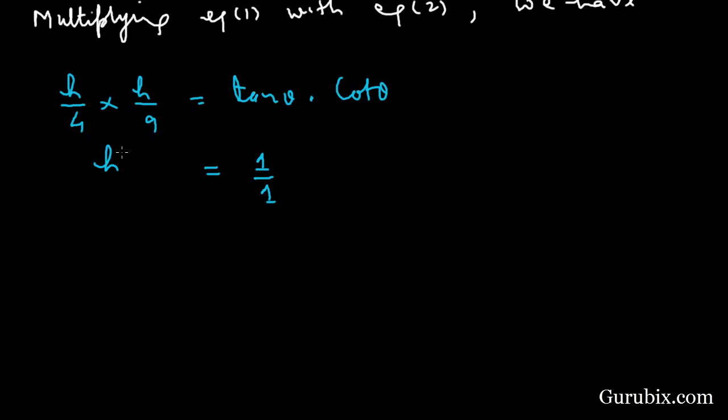Here we have H squared over 36. So H squared equals 36, H equals 6 meters.